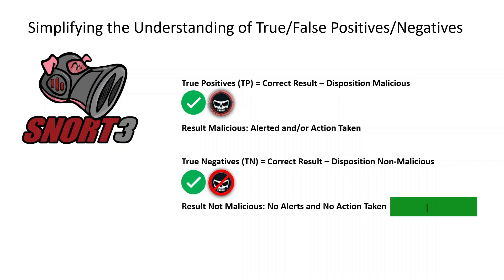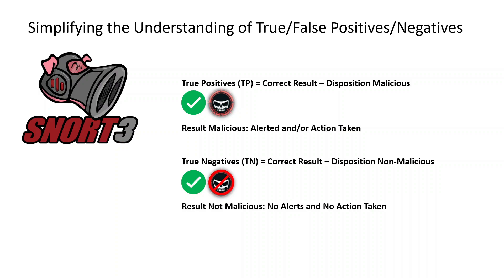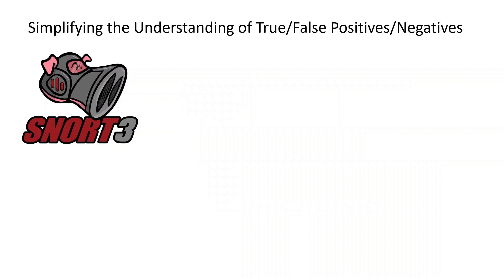The way to look at it is: true and false refers to a correct or incorrect outcome, and the disposition is either malicious or non-malicious. Now, false positives — this is an incorrect result where the disposition is in fact non-malicious.